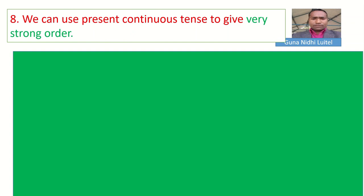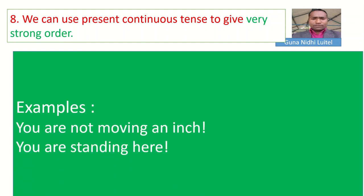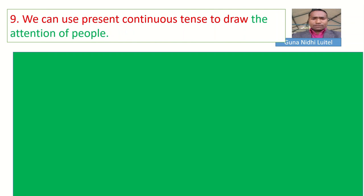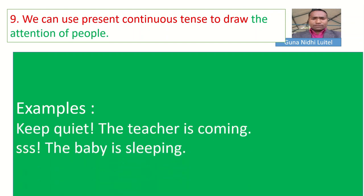Next rule: we can use present continuous tense to give a strong order in military style — a very strong, very cruel order. For example: 'You are not moving!' — you can see the exclamation mark, that makes the sentence an order. 'You are standing here, not going anywhere!' So this is a very strong order, like in a military way. We can also use present continuous tense to draw the attention of people. For example: 'Keep quiet, the teacher is coming!' or 'The baby is sleeping!'